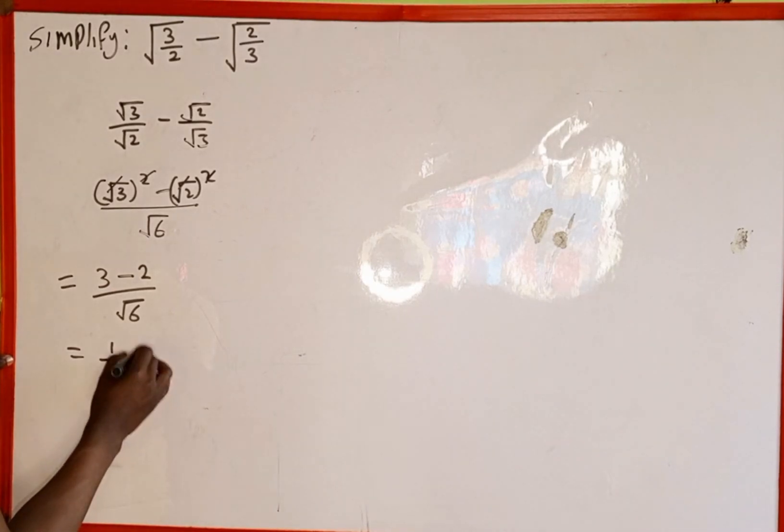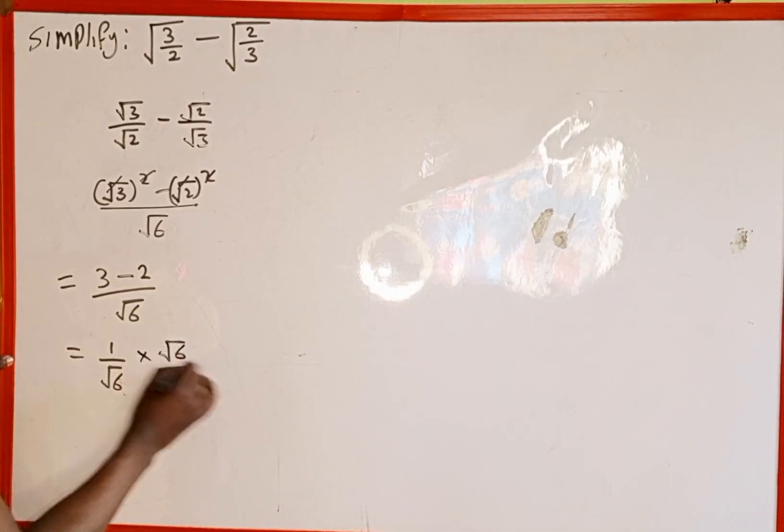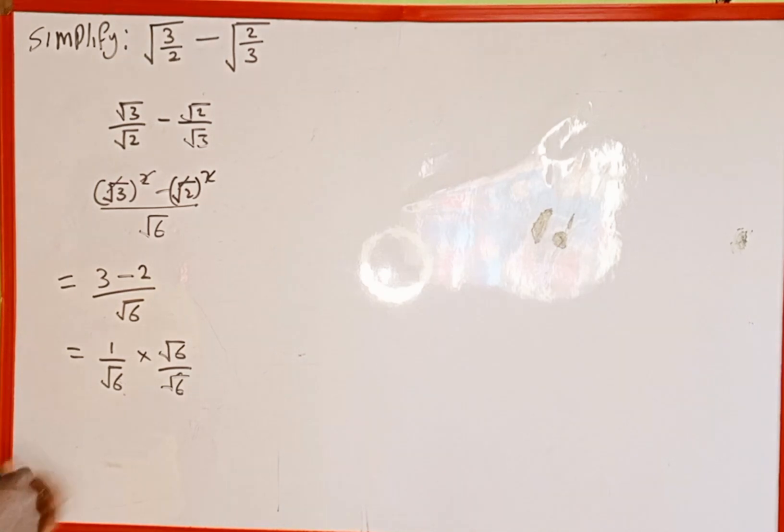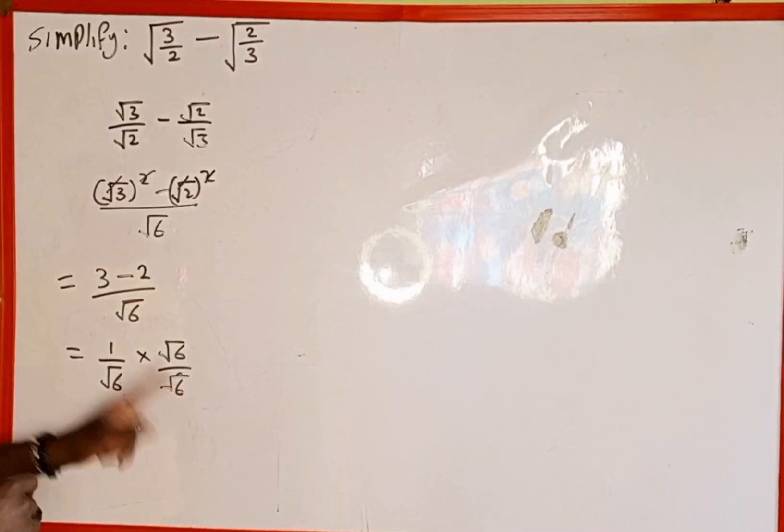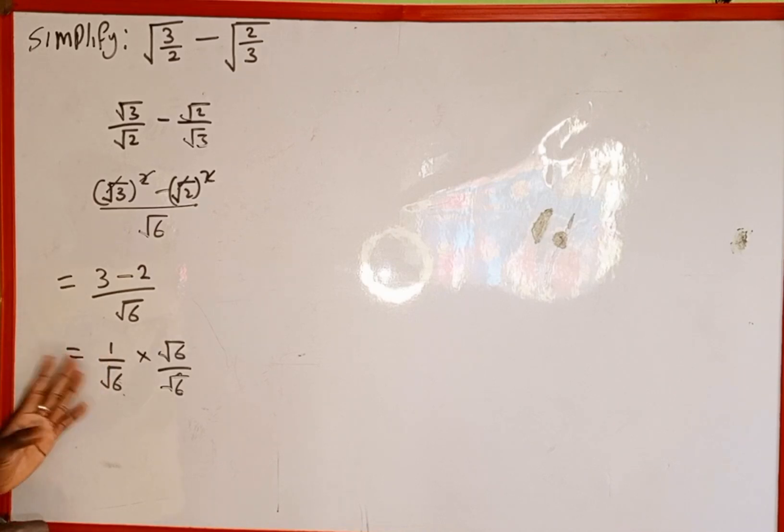So this is going to be the same as multiply by √6 over √6. We know if we divide √6 by √6 it is going to be 1. Then 1 multiplied by this expression is still the same. Nothing changed.